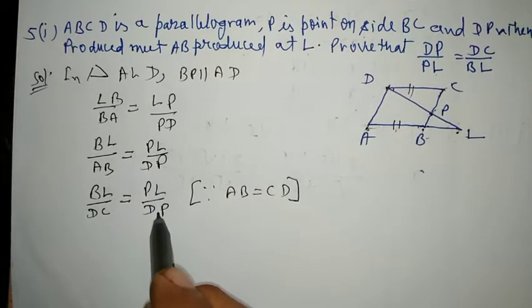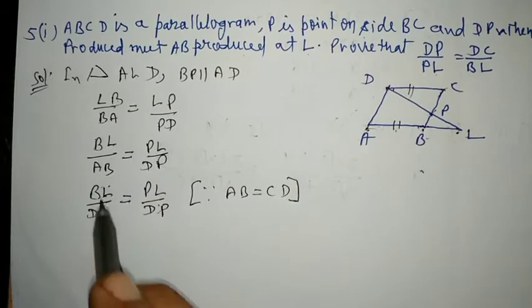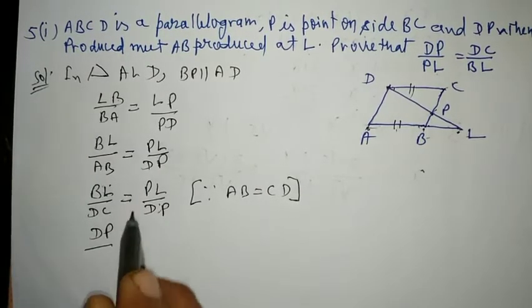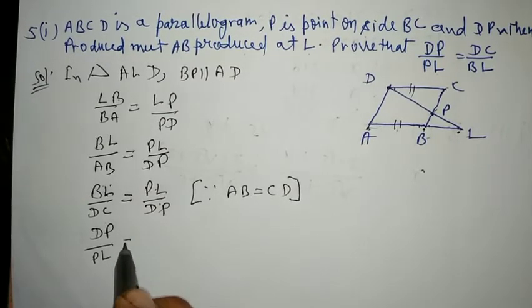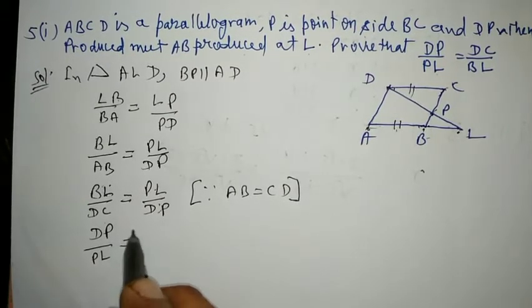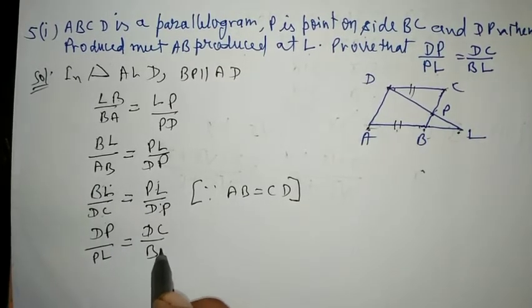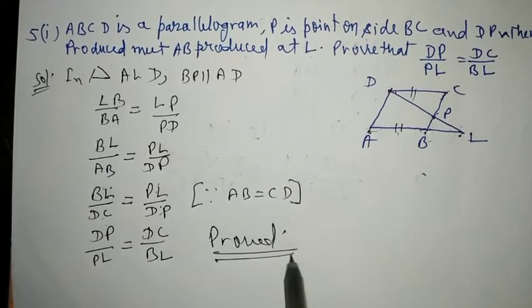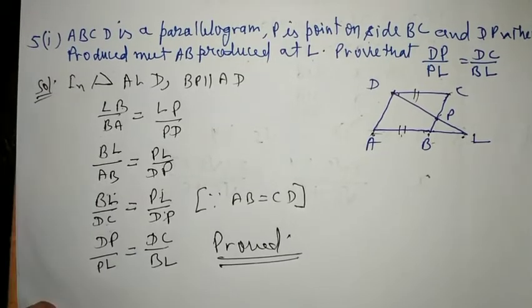Now cross-interchanging: DP upon PL is equal to DC upon BL. This is proved. Similarly, the second part can be completed.